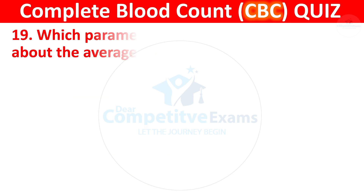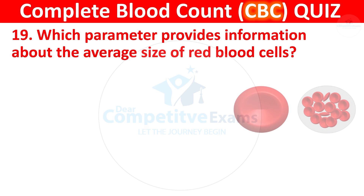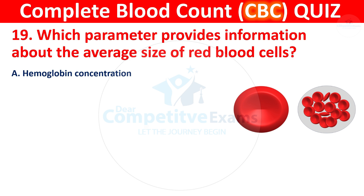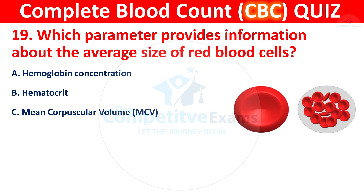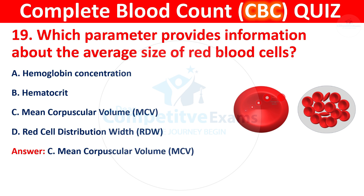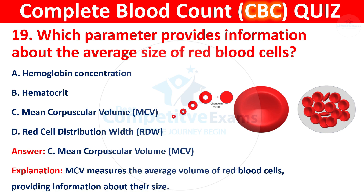Question 19: Which parameter provides information about the average size of red blood cells? The options are hemoglobin concentration, hematocrit, mean corpuscular volume (MCV), or red cell distribution width (RDW). The correct answer is C, mean corpuscular volume. MCV measures the average volume of red blood cells, providing information about their size.